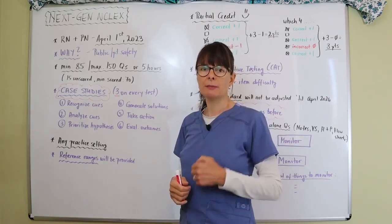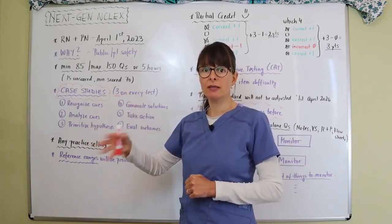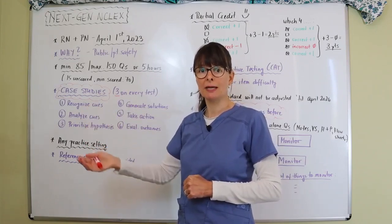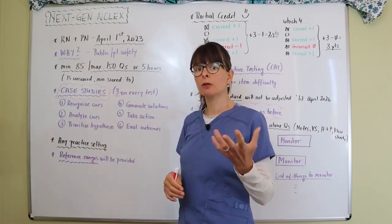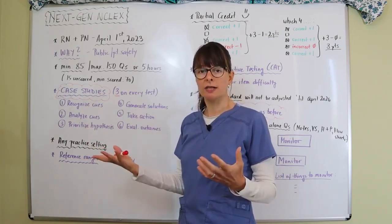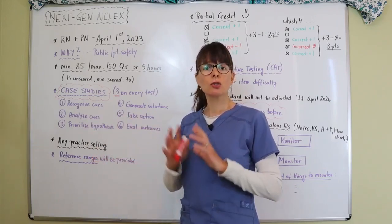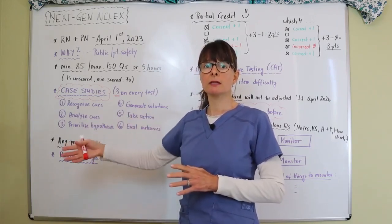There might be some repetitive questions about the same topic. Maybe at question five you get something about a certain topic, and then at question 27 it comes up again. This might be because one of the questions is scored and the other one is unscored, or maybe they relate to one another.